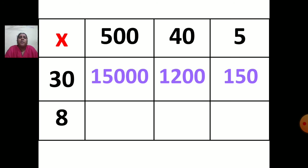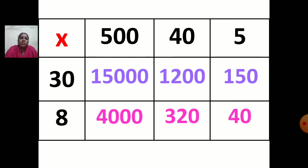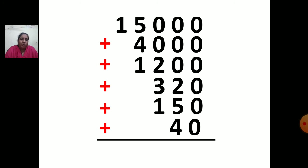Now go to the second number: 500 multiplied by 8 — 5 eights are 40, place 2 zeros — answer is 4,000. Next: 40 multiplied by 8 — 4 eights are 32, place 1 zero — answer is 320. Then: 5 multiplied by 8 is 40. Now you have all the answers. Add all the numbers: 15,000; 4,000; 1,200; 320; 150; and 40.